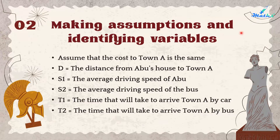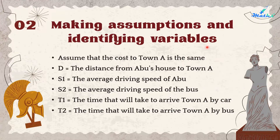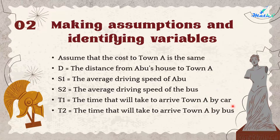Step 2 — Making assumptions and identifying variables: We assume that the cost to travel to Town A is the same whether by car or by bus. Our variables are: z = distance from Abu's house to Town A; s1 = average driving speed of Abu; s2 = average driving speed of the bus; t1 = time to arrive at Town A by car; t2 = time to arrive at Town A by bus.